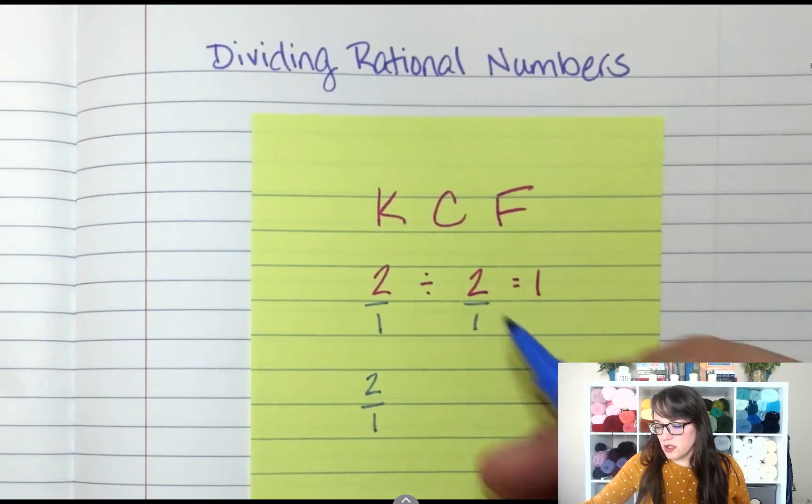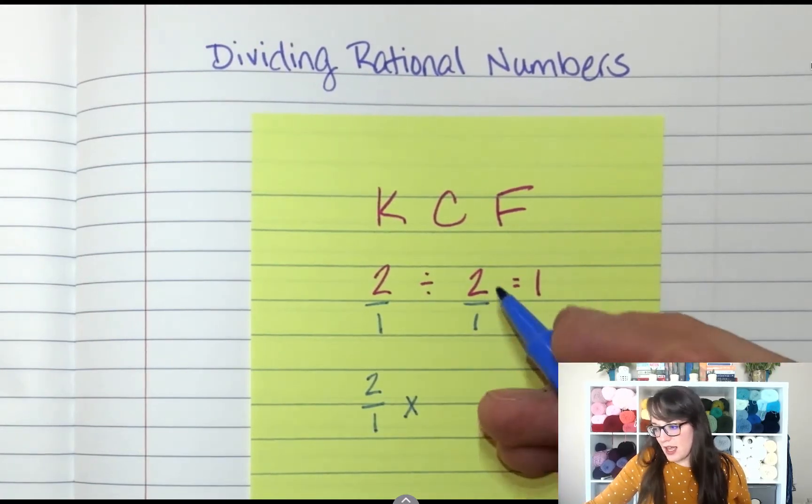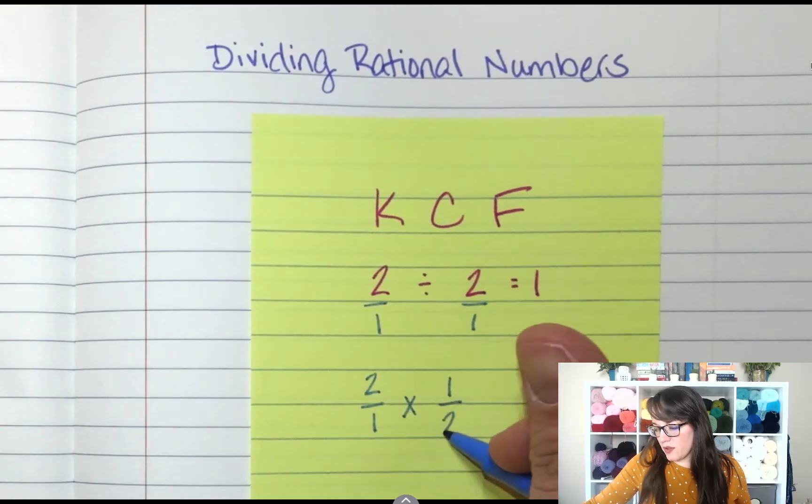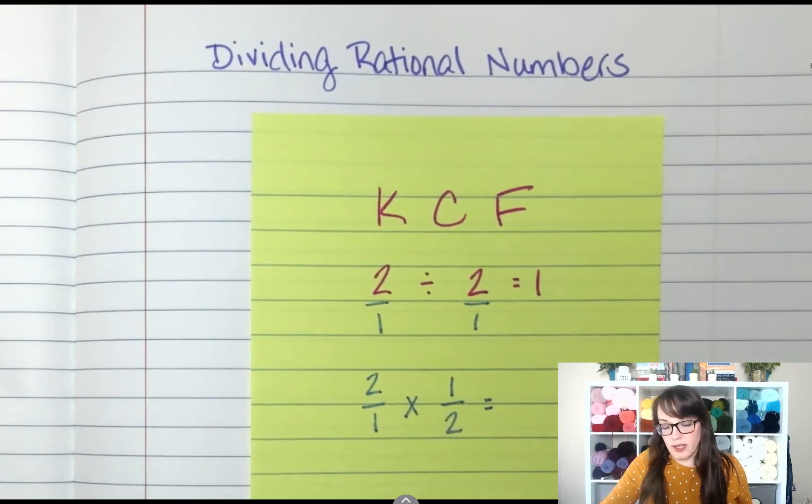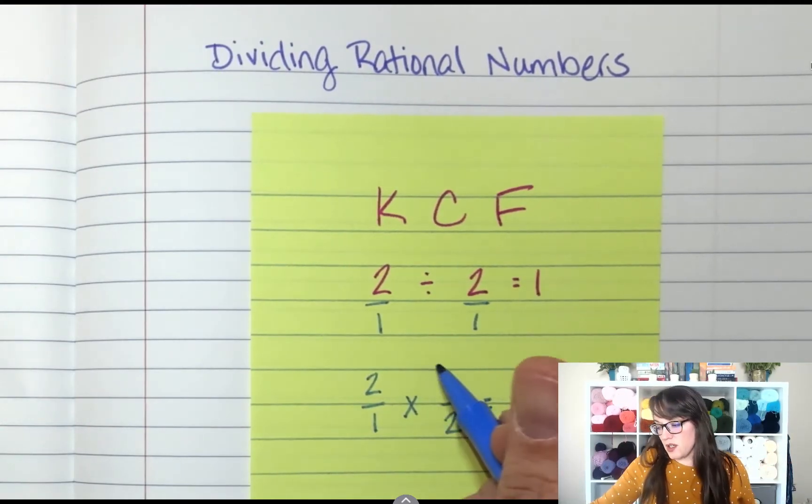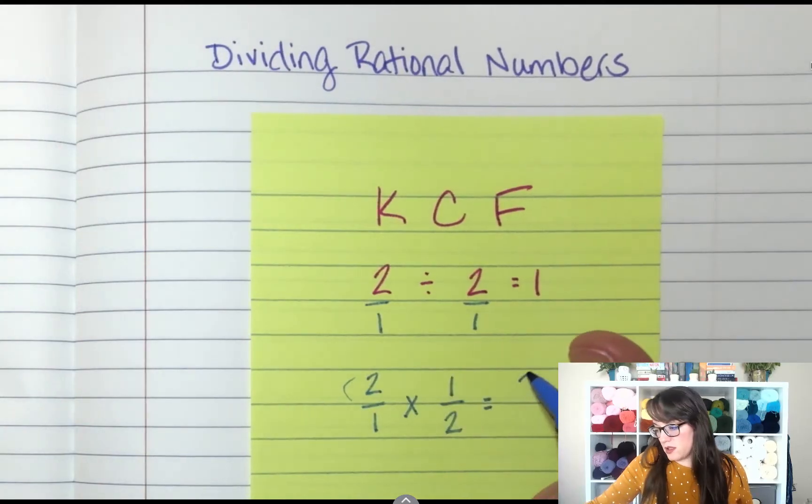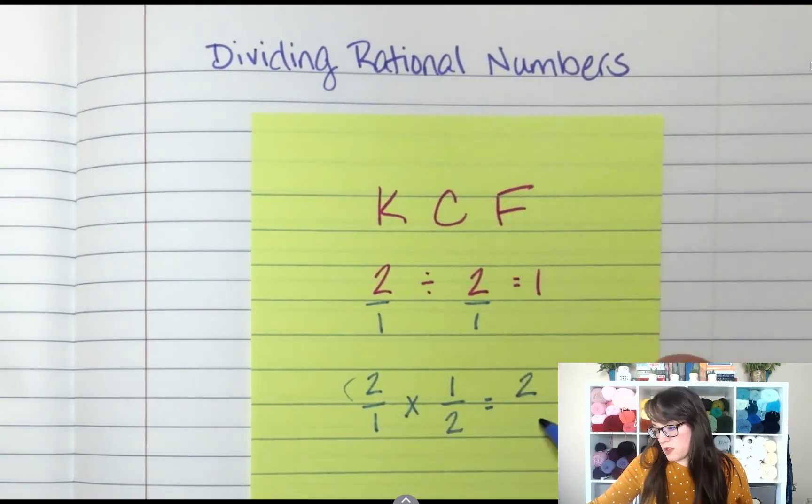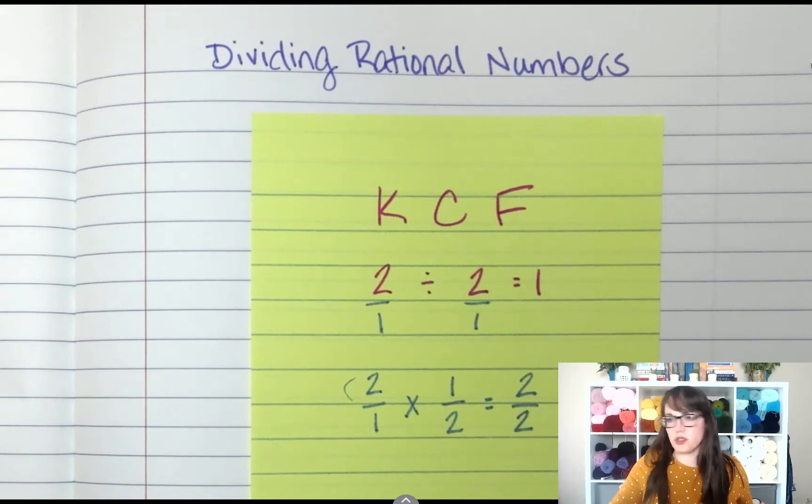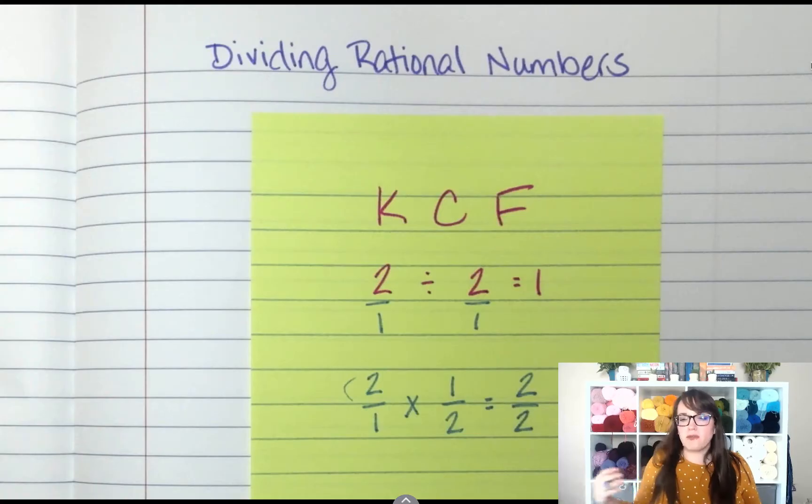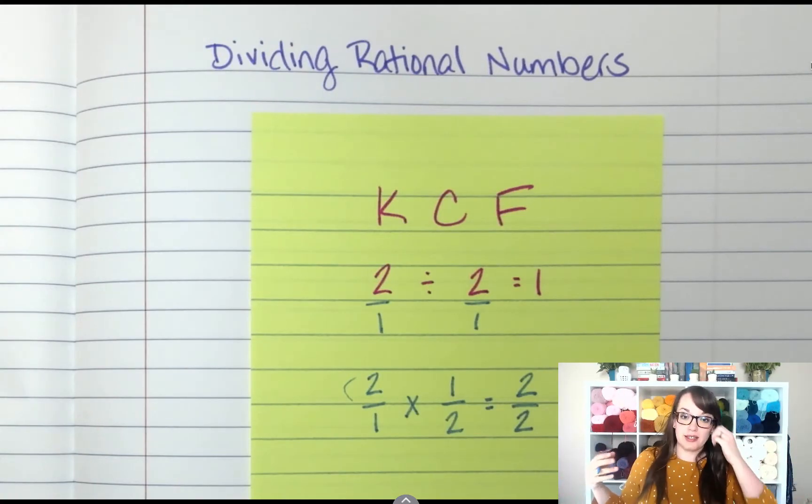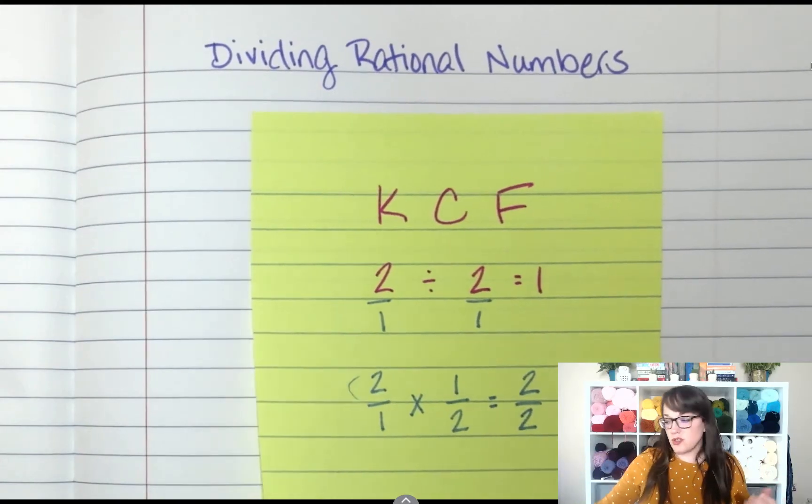So keep the first one, 2 over 1, change this to multiplying, and flip that to 1/2. Then you multiply your fractions like you did last time. 2 times 1 is 2, and 1 times 2 is 2, and 2 divided by 2 is 1. So keep change flip isn't some magical different math. Keep change flip works—you still get 1.